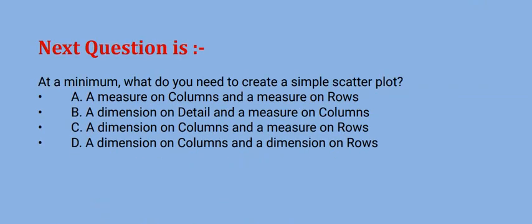Next question is: at a minimum what do you need to create a simple scatter plot? Options are option A a measure on columns and a measure on rows, option B a dimension on detail and a measure on columns, option C a dimension on columns and a measure on rows, and option D a dimension on columns and a dimension on rows. The correct option is option A.